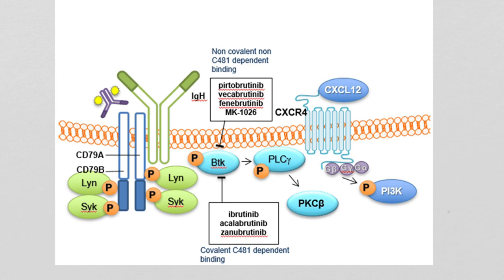We have a few different categories of drugs. One family is non-covalent, meaning reversible, binders. The other family is covalent, irreversible binders. The key question is which of these will be used as first-line treatment, and interestingly, whether the mechanisms that cancer cells use to become resistant to these inhibitors carry over between the different types.